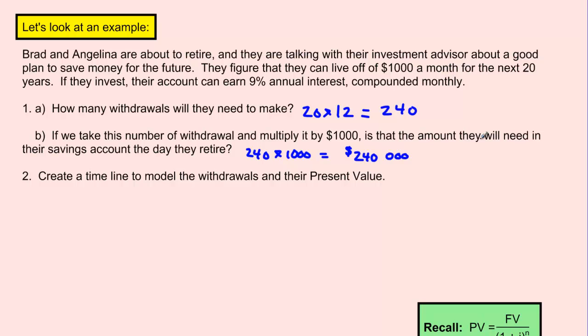Because even though you're taking out $1000 every month, remember that the initial amount or the present value that you put into this account that you're going to be making withdrawals from will be earning interest. So you don't have to put in $240,000 in the account. You need to put in less, and that money will then earn interest into the future and enough interest to be able to pay off $1000 a month for the next 20 years.